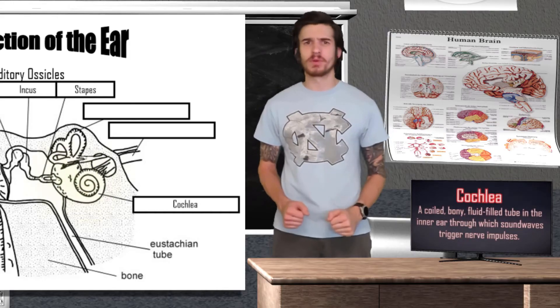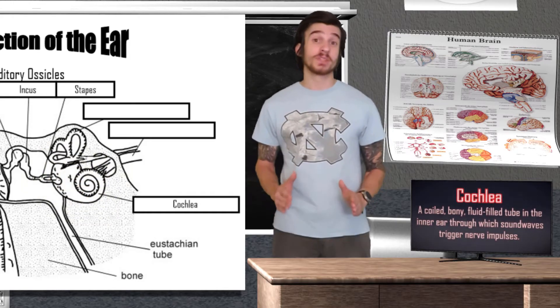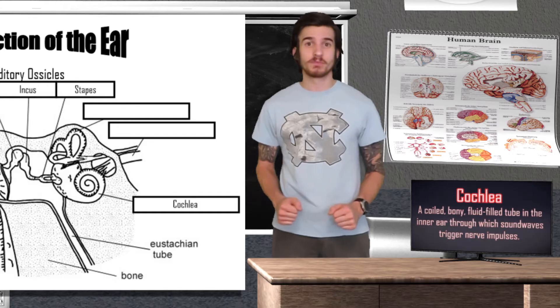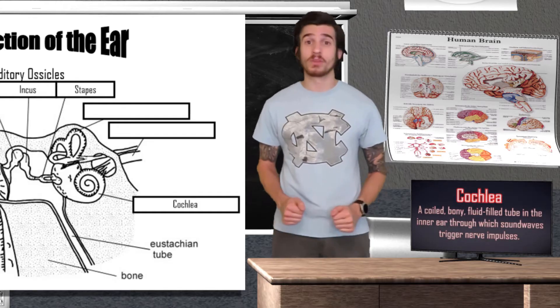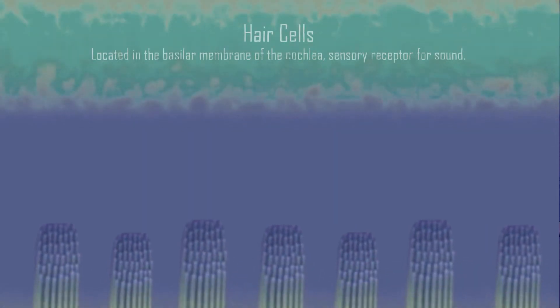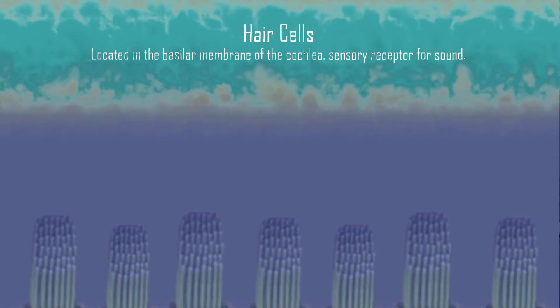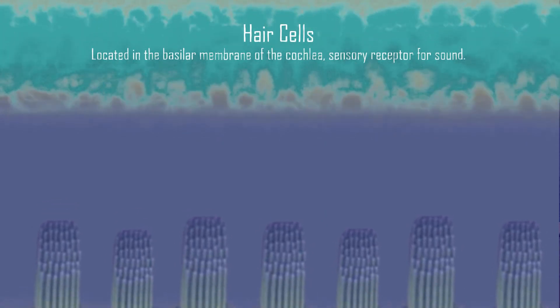The cochlea is a fluid-filled tube in the inner ear where sound waves trigger nerve impulses. Located inside the cochlea, we have our basilar membrane. It is inside the basilar membrane where our sensory receptors for hearing reside. As sound waves enter, fluid inside the cochlea starts to vibrate, creating a ripple. Submerged in this fluid are your hair cells, which are your sensory receptor for hearing. The hair cells are going to be affected by these ripples caused by the vibrations and move along with them.